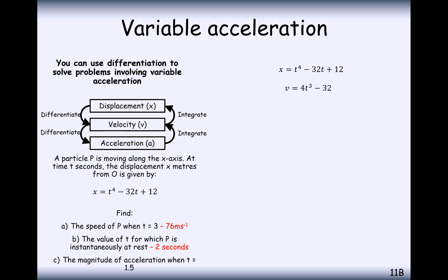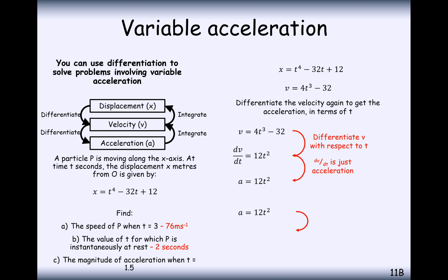Part c is find the magnitude of acceleration when t equals 1.5. So we've got velocity, let's differentiate it again to get acceleration. So we'll get 12t squared and plug in t equals 1.5 and that will give us 27. So it's 27 meters per second squared is the acceleration when t equals 1.5.